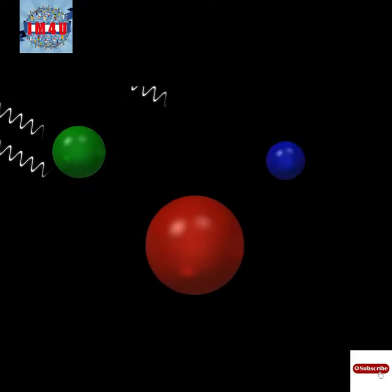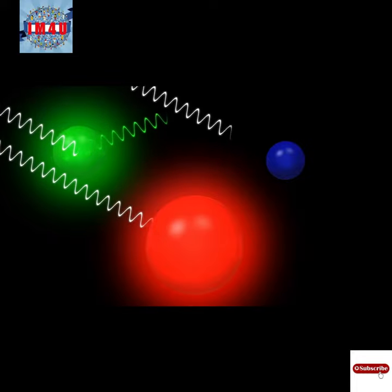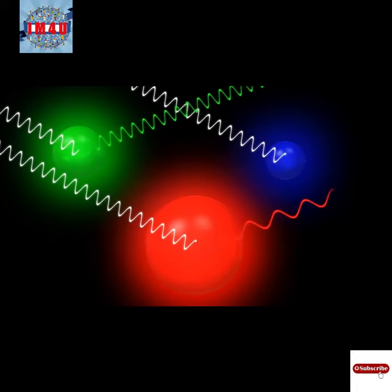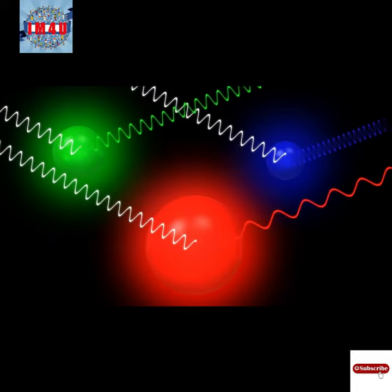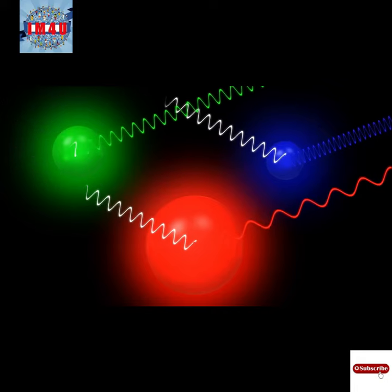When light excites a quantum dot, the larger the size of the dot, the lower the energy waves will be, resulting in a redder light. The smaller it is, the bluer the light will be.